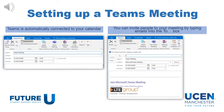Setting up a Teams meeting is really simple to do. Your Teams meeting should be automatically available in your Outlook app. If you go onto your Outlook emails and then into Calendar, you can set up a calendar invite as you normally would, and then click Teams Meeting to create a Teams meeting link. You can then invite people to your meeting by clicking into the To box.